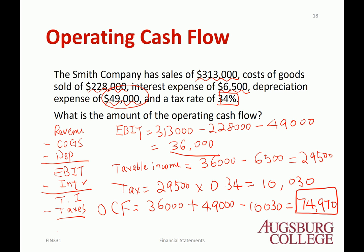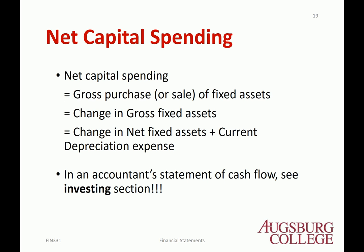The operating cash flow can be easily computed by constructing the income statement first, then plugging numbers into the format. That's probably the easiest way to compute the operating cash flow. Next, let's look at net capital spending, which is about fixed asset changes.